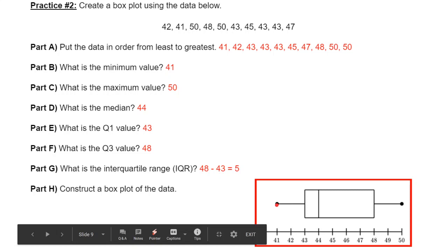Then you're able to create your box plot. 41 is your minimum, 43 is your quarter one value, 44 is your median, 48 is the quarter three, and 50 is your maximum.